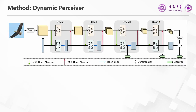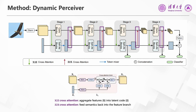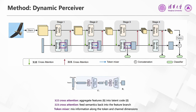Here is the detailed architecture of our Dynamic Perceiver. It is generally composed of four stages. At the beginning of each stage, a cross-attention layer is used to distill the input information into the latent code. After that, the two branches execute their computation blocks respectively. At the end of each stage, a reversed cross-attention layer feeds the semantic information back into the Feature Branch. Moreover, we build token mixers between every two stages of the Classification Branch to mix information along the token and channel dimensions respectively.